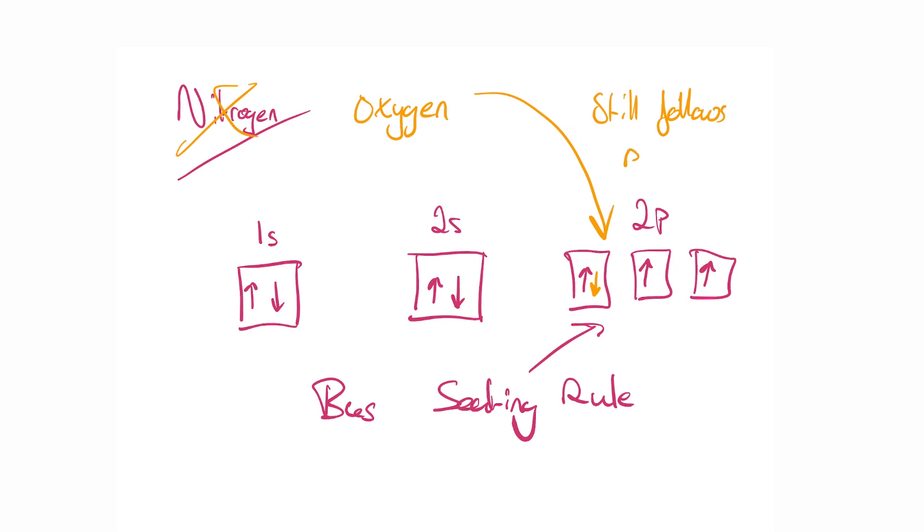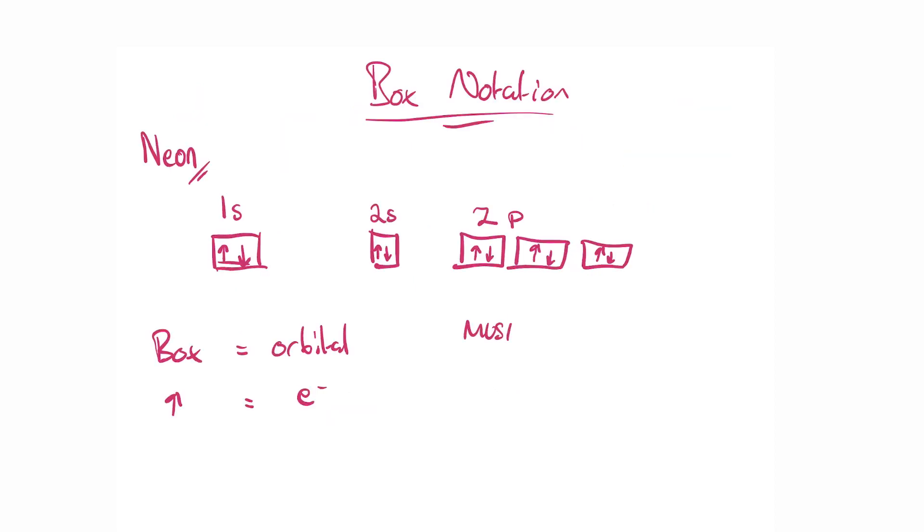Something also important to mention is that one arrow must point up and one arrow must point down if there is two in a box. That is because the direction of the arrow represents a quantum property called spin. Again, no explanation required. Just remember, one arrow up, one arrow down.